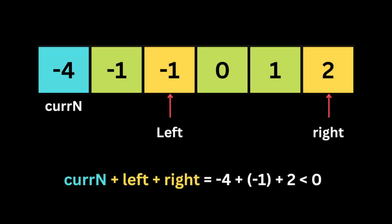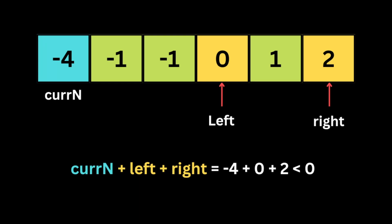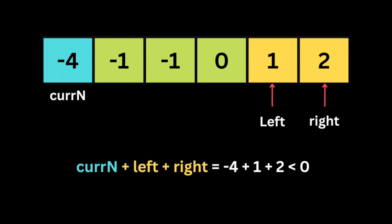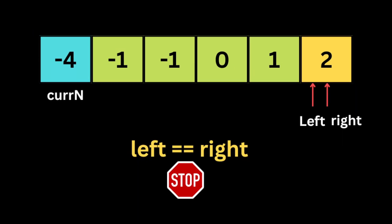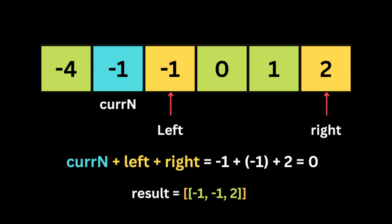If the sum is smaller than zero we move the left pointer. For example, if the left pointer value is minus one, the right pointer value is two, and the current number is minus four, the total is negative three. Since we have a sorted array with greater numbers on the right and smaller on the left, moving the right pointer to the previous number decreases the value and moving the left pointer to the next number increases it. So we move the left pointer to the next number and repeat the process, checking each time if the total equals zero. Once the left and right pointers meet, we start the next iteration.